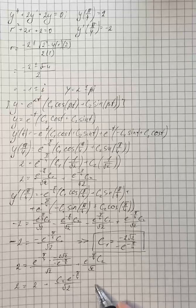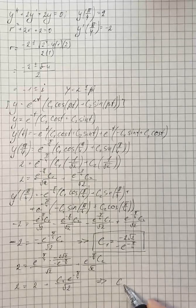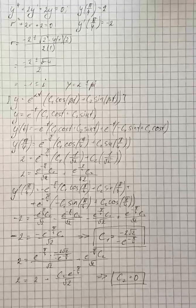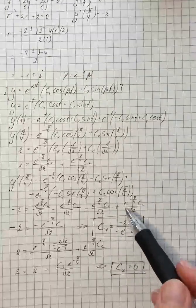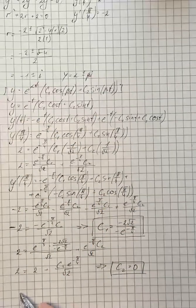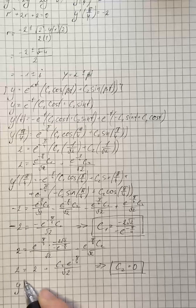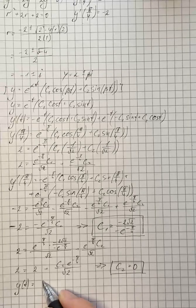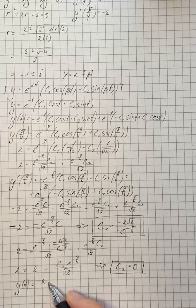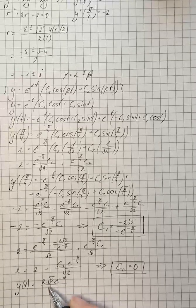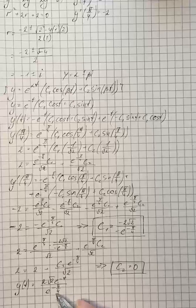We find that c₂ equals 0. Now we substitute these values into our general solution. The final solution is 2 square root of 2 times e to the power of negative t over e to the power of negative π/4, which simplifies as our particular solution.